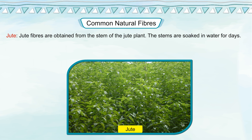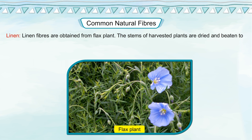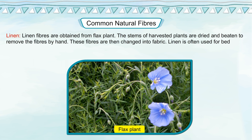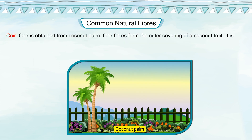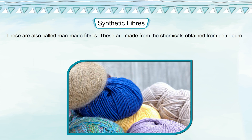Jute fibers are obtained from the stem of the jute plant. The stems are soaked in water for days, they start rotting, and the fibers are separated from them by hand. These fibers are dried and woven into fabrics. Linen fibers are obtained from the flax plant — the stems of harvested plants are dried and beaten to remove the fibers by hand, then changed into fabric. Linen is often used for bed coverings. Coir is obtained from the coconut plant — coir fibers form the outer covering of a coconut fruit and are used in making ropes and mattresses.